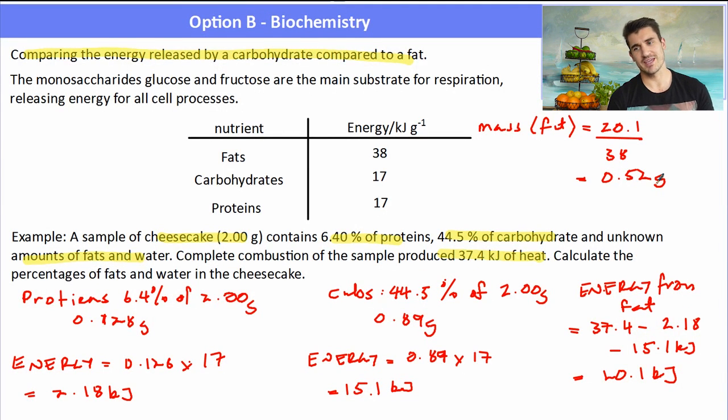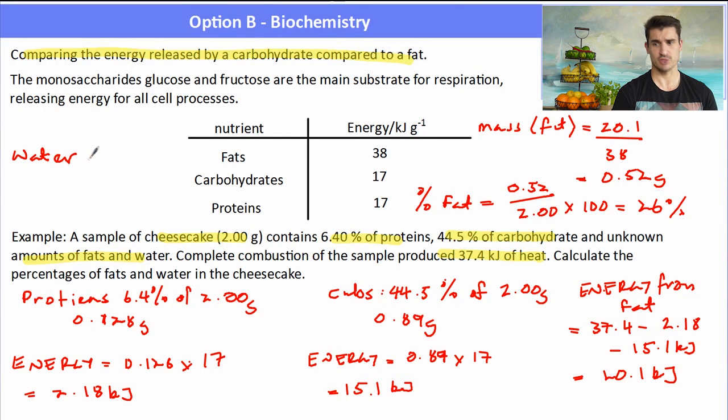From that, we can then work out the percentage of fat in this cheesecake. 0.52 divided by 2, because our cheesecake weighed 2 grams, multiplied by 100 will give us our percentage of fat. Once we've got the percentage of fat, then that does not add up to 100. If we add up all those percentages, so the water must be the remaining part of this percentage. So how much is left over in percent terms? Well, we add all those 3 percents up, take them away from 100, and that tells us that we have 22.7% of this cheesecake that was water.